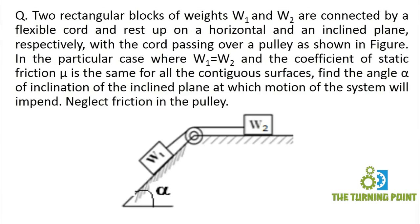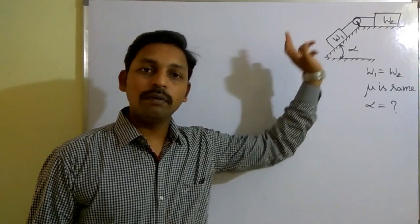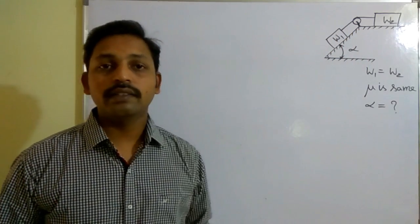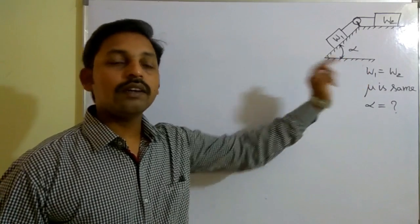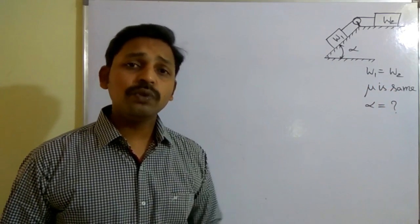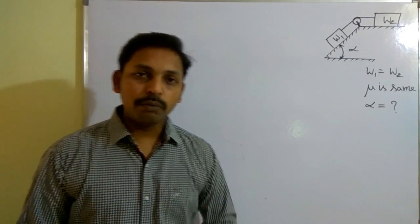Hello everyone, welcome to The Turning Point. In this session, let us solve a problem on friction. The given question is: W1 is resting on an inclined plane and W2 is resting on a horizontal plane. They are connected to a pulley by means of a string. You are supposed to calculate alpha. It is mentioned that W1 is equal to W2 and mu is the same for all contact surfaces.